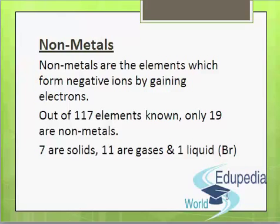Non-metals appear at the right-hand side of the periodic table. This point should be kept in mind — non-metals are at the right-hand side of the periodic table. Out of the non-metals, 7 are solids, 11 are gases, and only one is liquid — that is bromine.